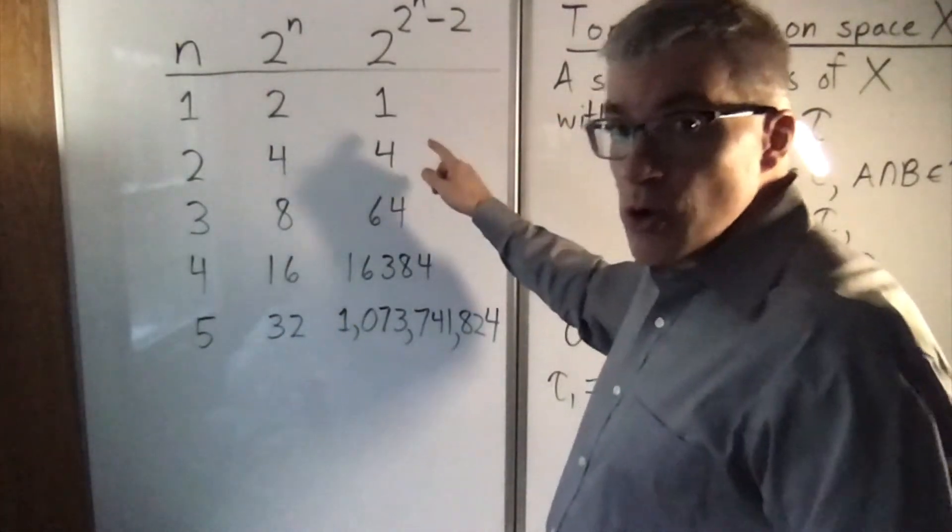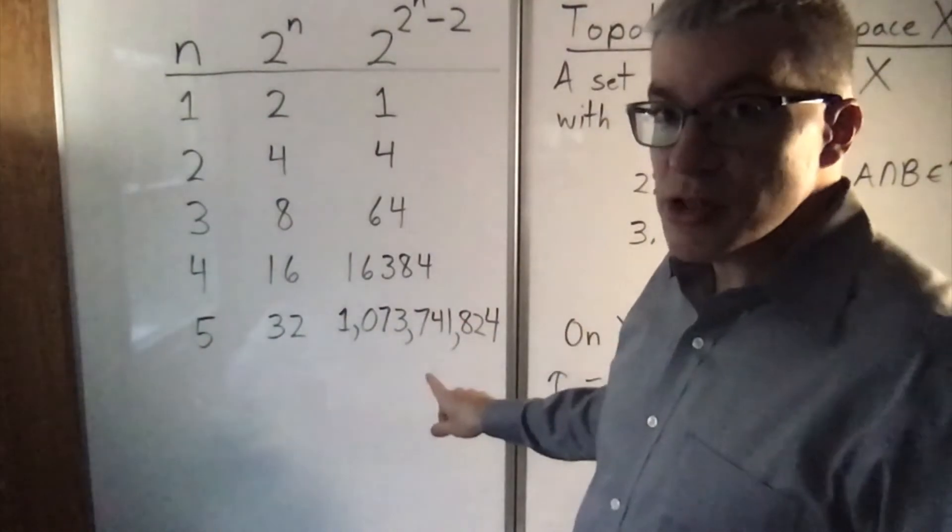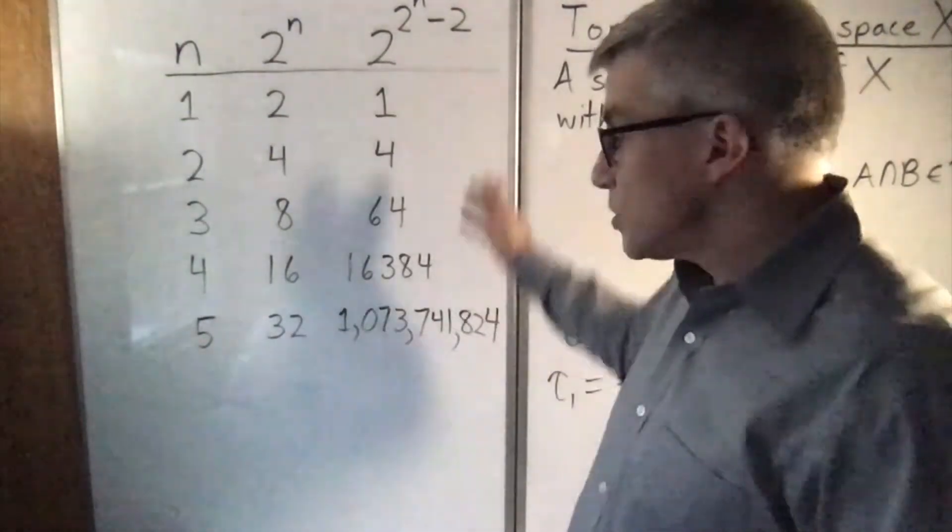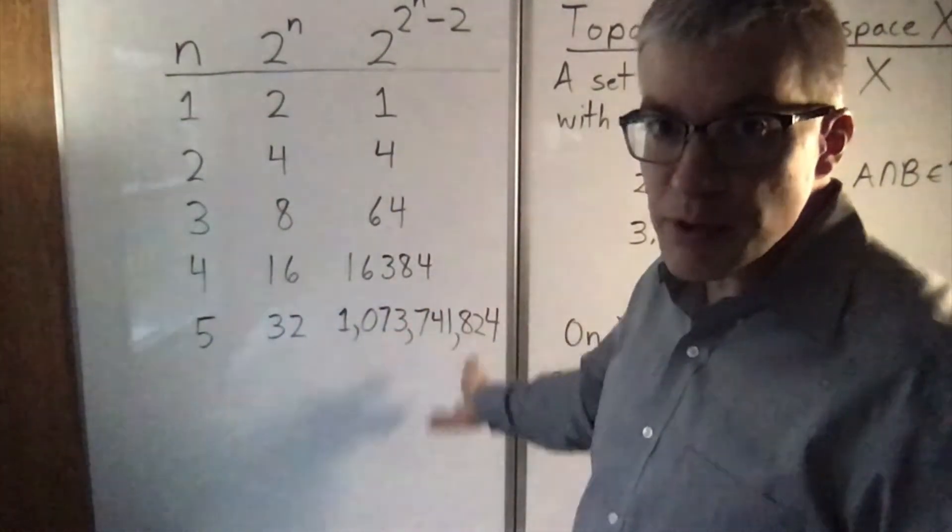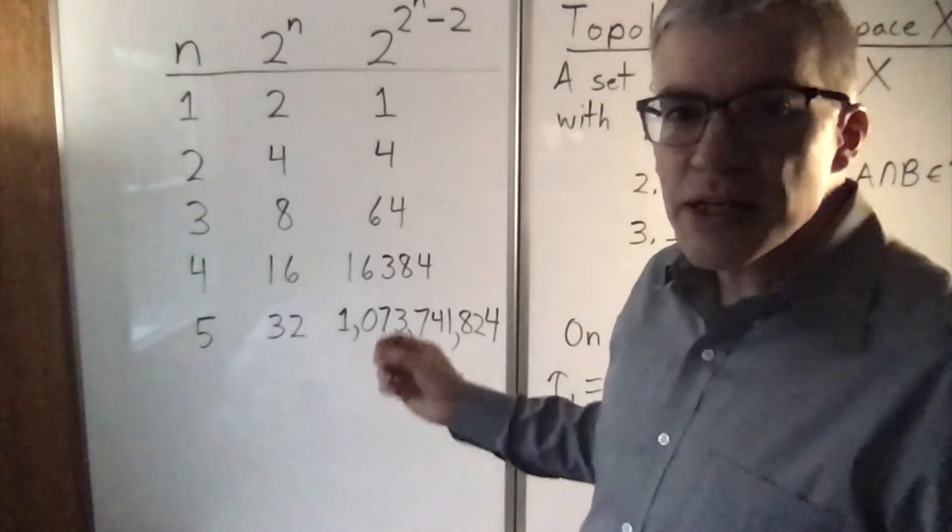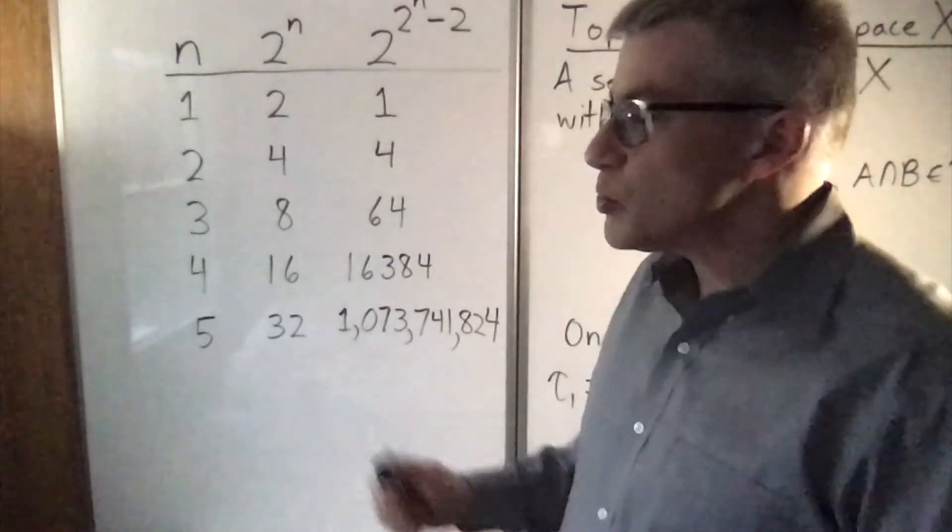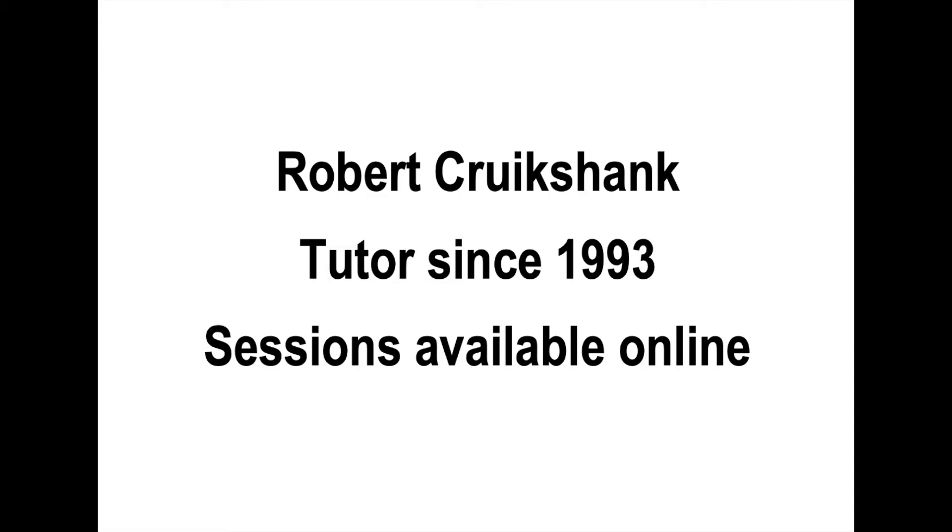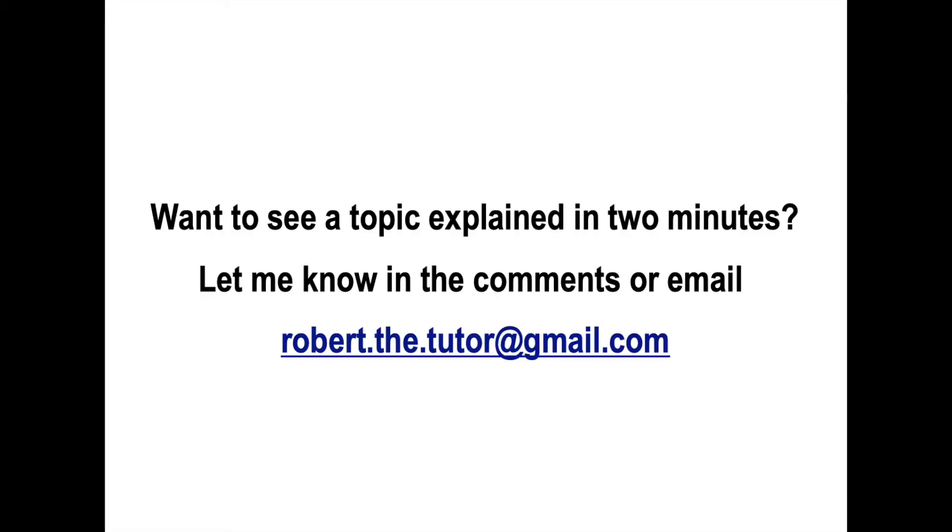We actually don't know how many of these really are topologies for general n. Of course it's been solved - Wikipedia has a list of them for the first however many. But it's an ongoing mystery what the general rule is. Thank you very much.